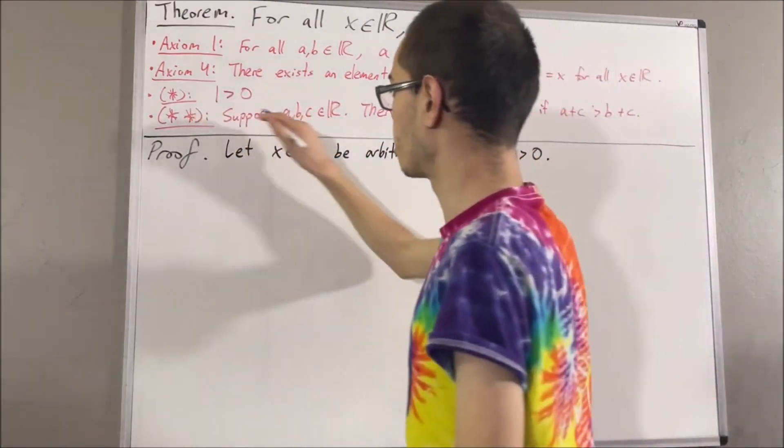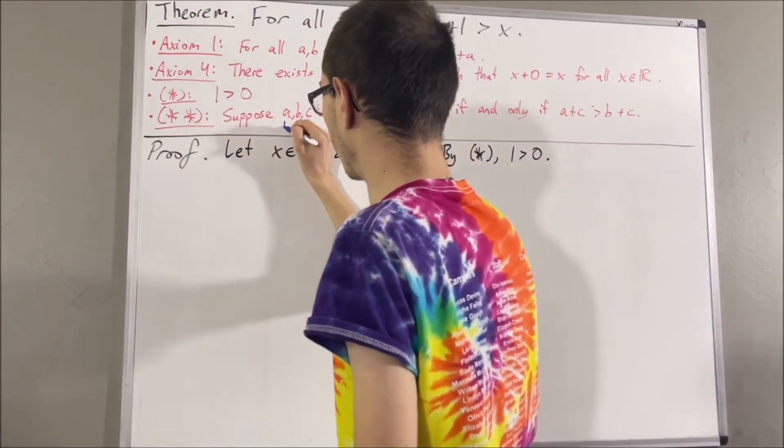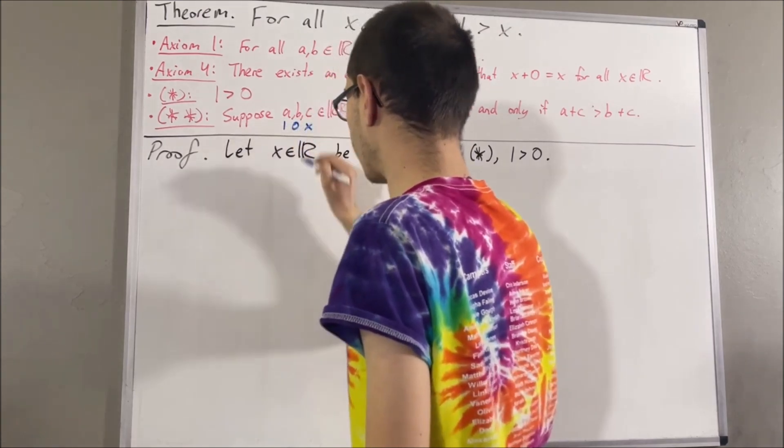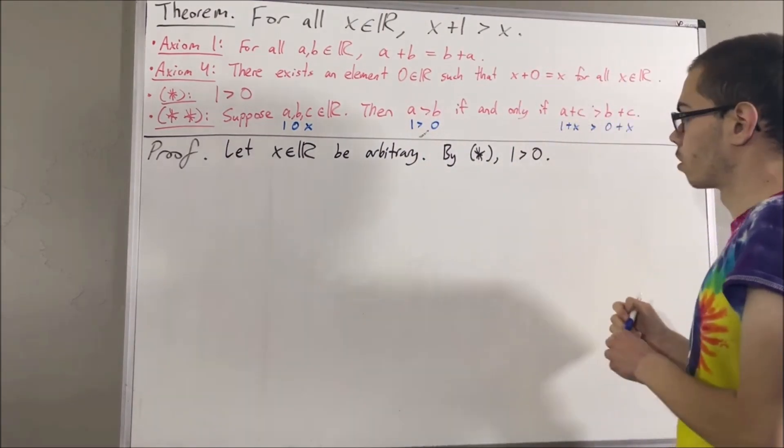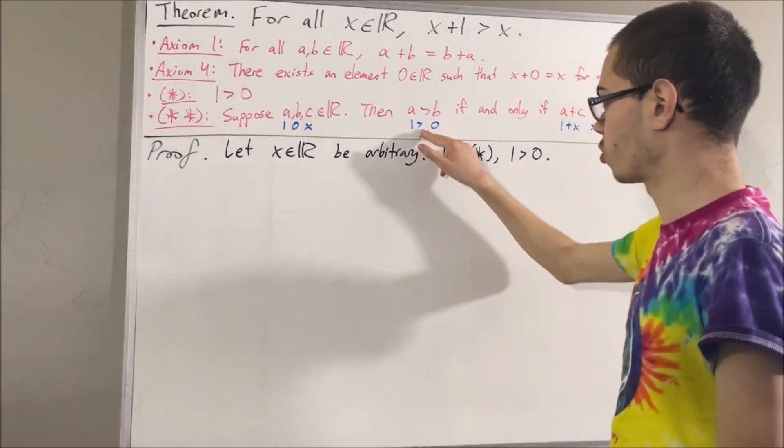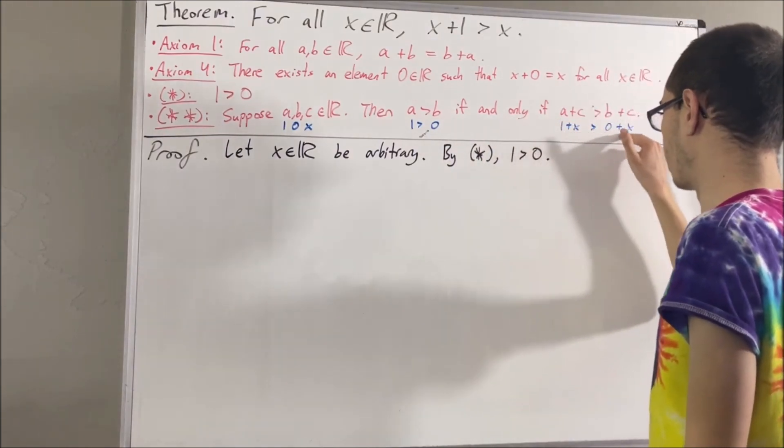And then, applying star star, we're going to take a to be 1, b to be 0, and c to be x. Well, in that case, we have 1 is greater than 0, if and only if 1 plus x is greater than 0 plus x.